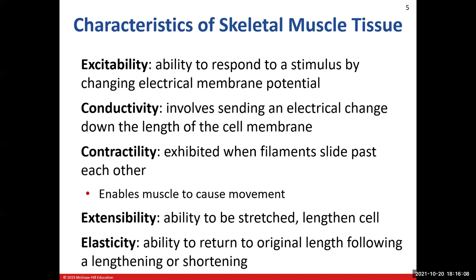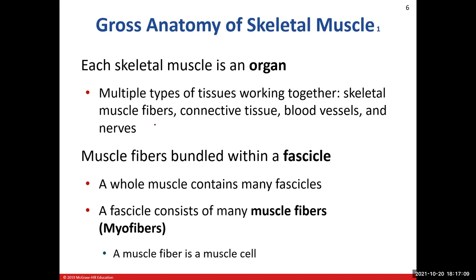Extensibility is the ability to stretch skeletal muscle tissue — like when a PE instructor has you stretch out, they're testing the characteristic of extensibility, the ability to lengthen the cell. Finally, elasticity is the ability to return to original shape or length after being changed. Once contracted or lengthened and then released, skeletal muscle returns to its original length — that's elasticity.